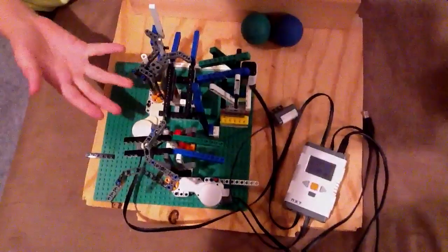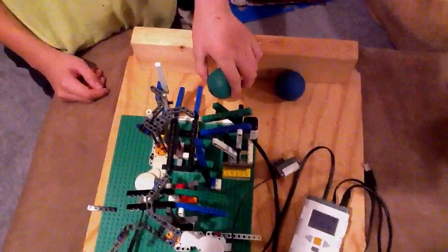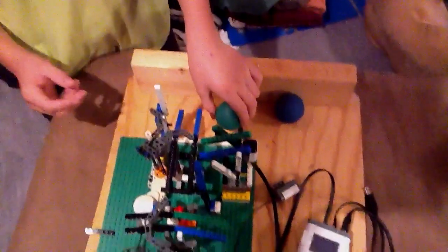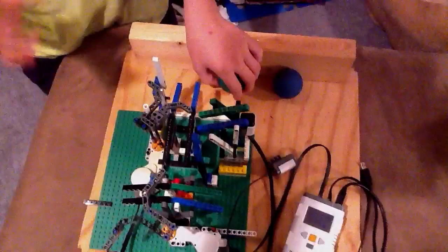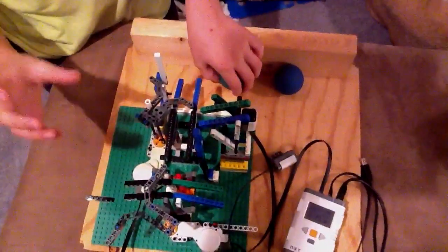All right, so this is our robot ball sorter. What happens is this ball is non-magnetic, and what this does is it sorts non-magnetic balls from magnetic balls. The non-magnetic balls go to crates either here or here.